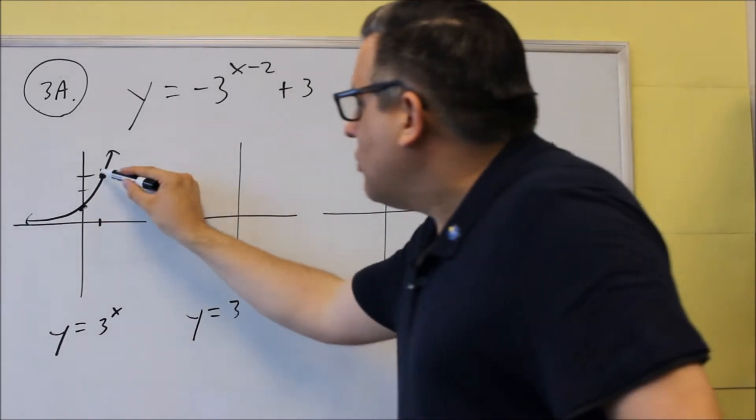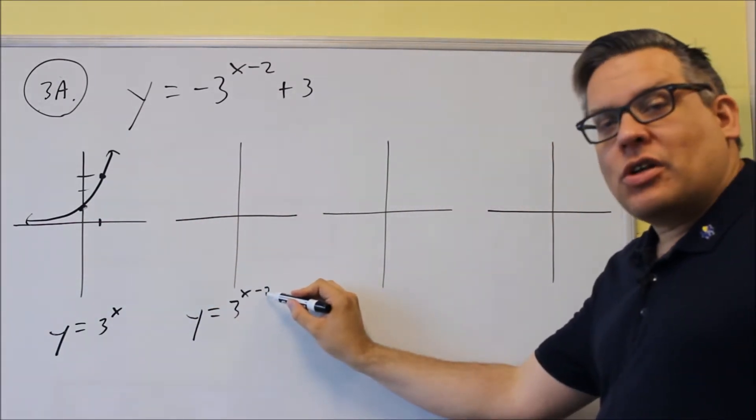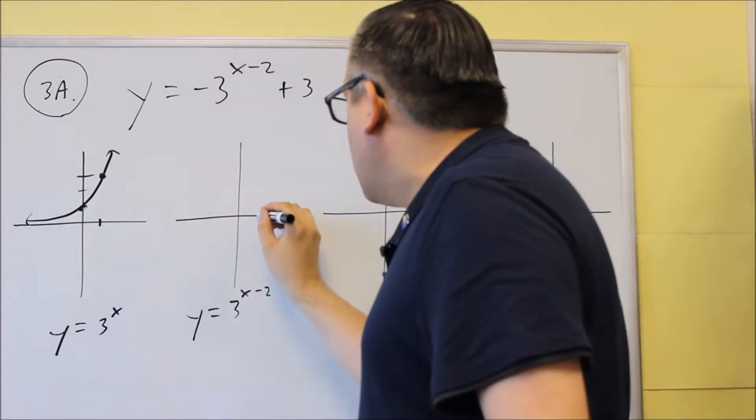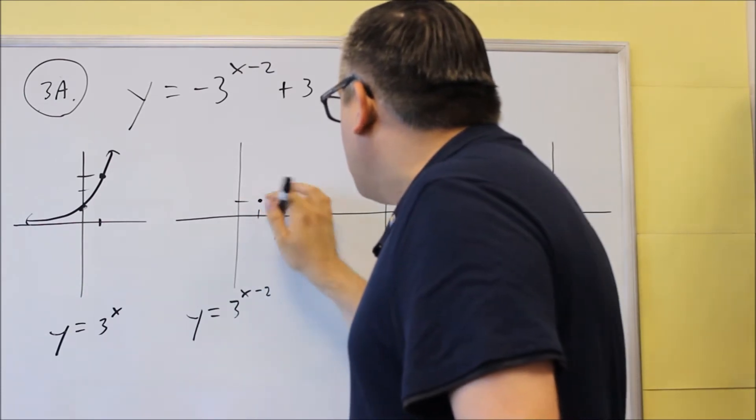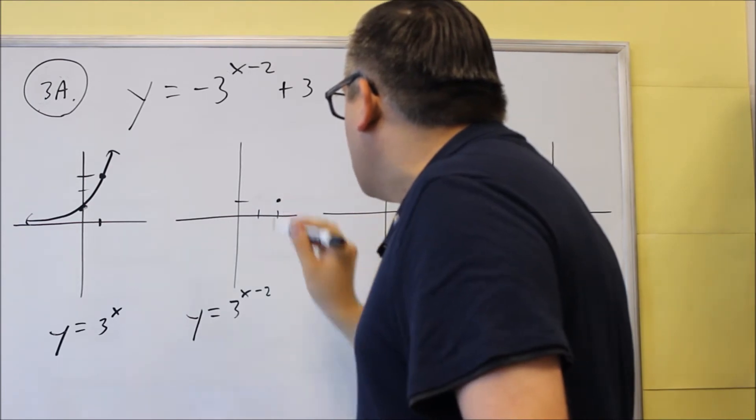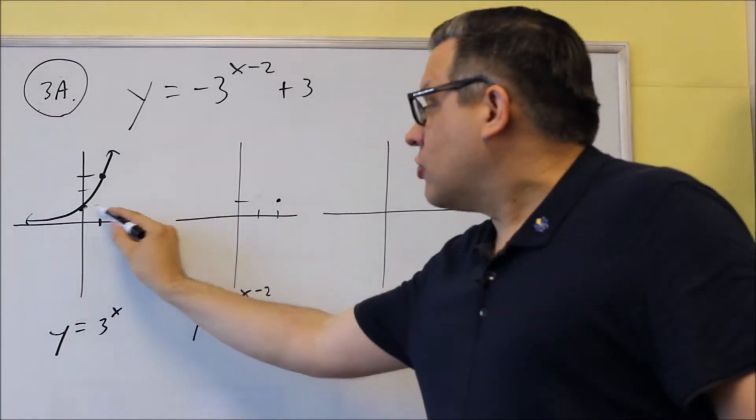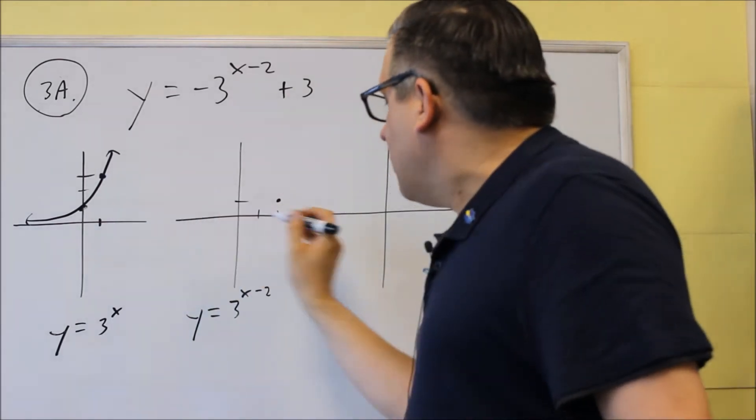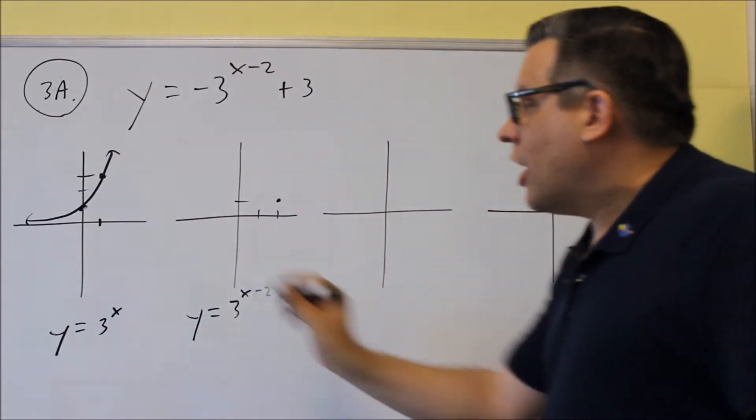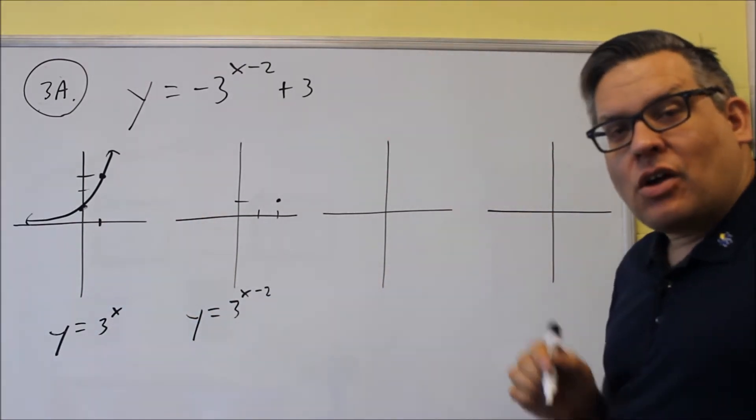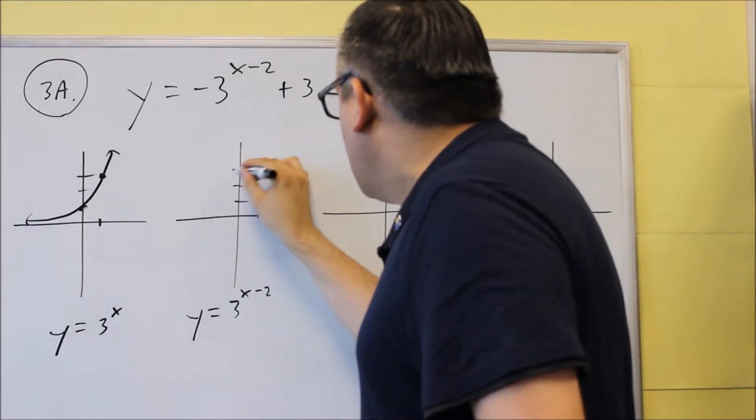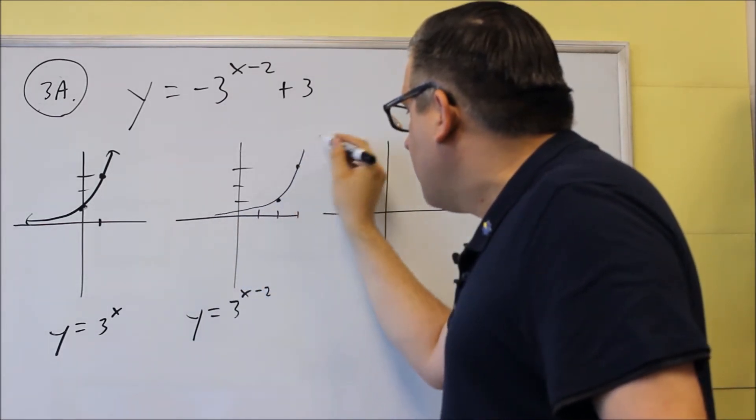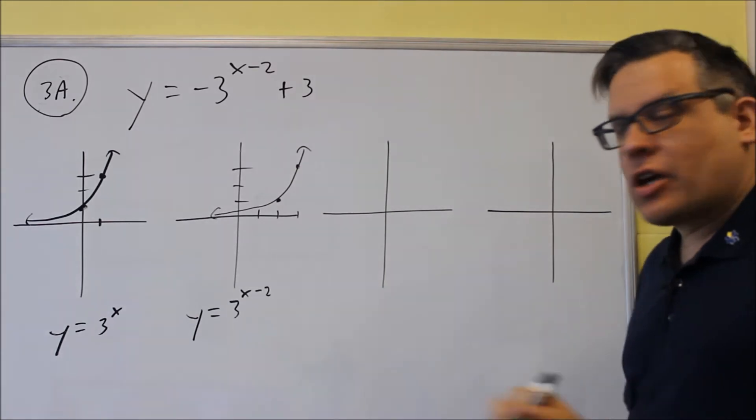Now what that does is these two key points, it's going to move them opposite direction of what you see here. So both of these are going to move two places over to the right, which means that instead of that one being at 0, 1, it's going to be at, we moved over two places, so it's going to be over at 2, 1. So that got shifted over two places to the right because of this right here. Also this other one, that gets shifted over two units as well. So instead of being at 1, 3, it's now going to be at 3, 3. And the graph is going to now follow this and go up and look something like that. So that's what the second one is going to look like.